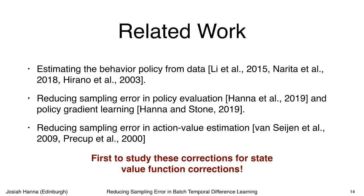The idea of estimating the policy which generated your data and using importance sampling has been explored in other works before, and has been shown to increase statistical efficiency there as well. Our work is set apart in that we are the first to study these corrections for state value function learning.